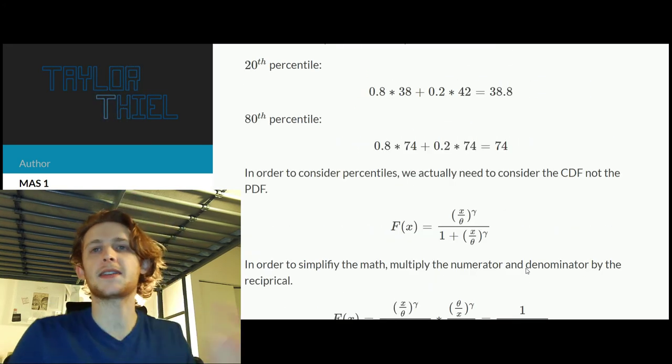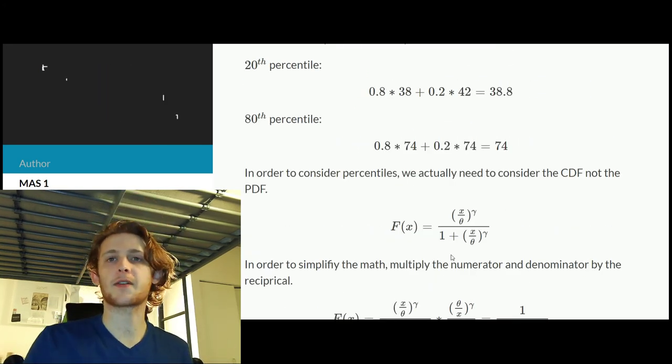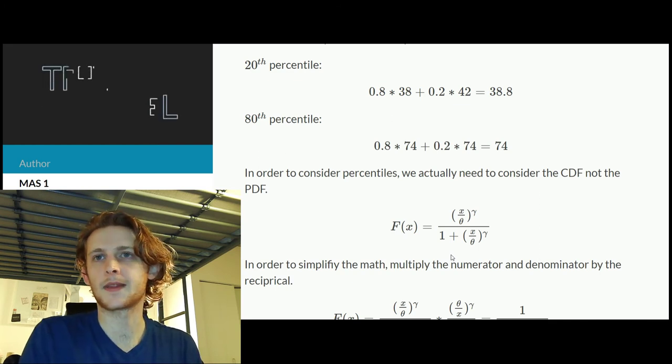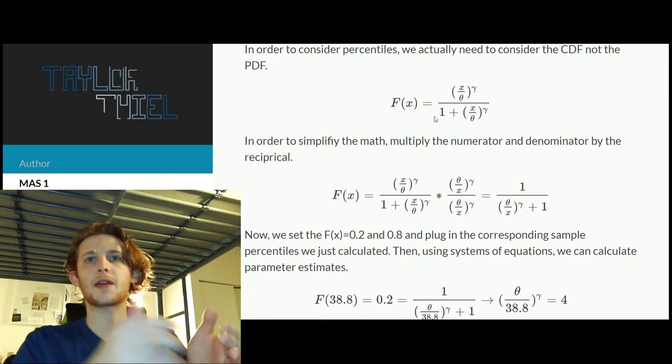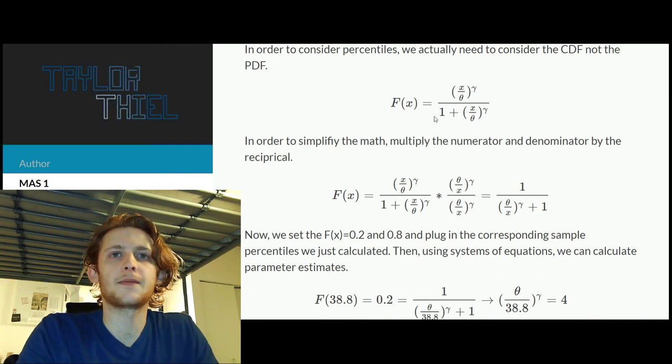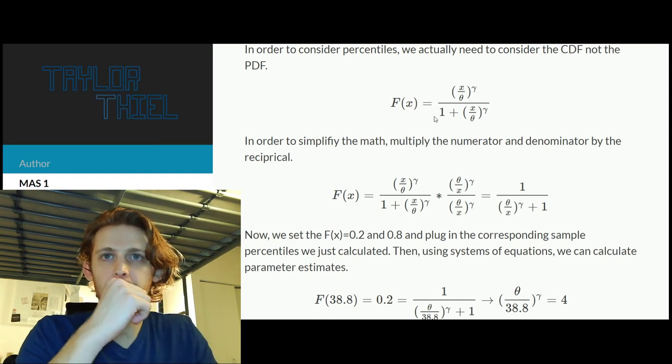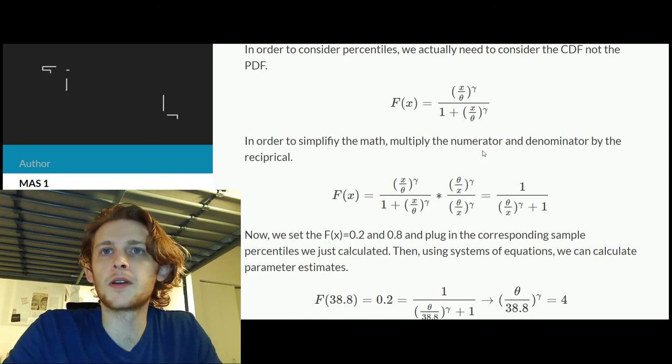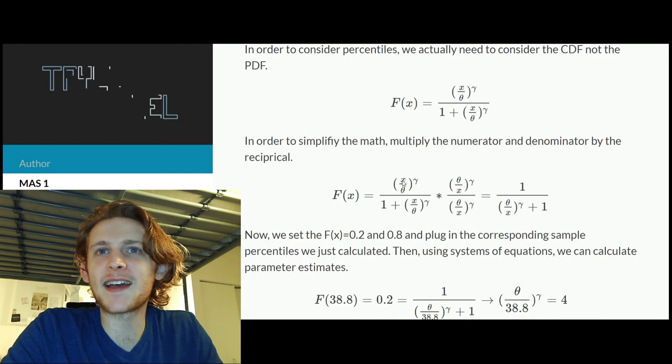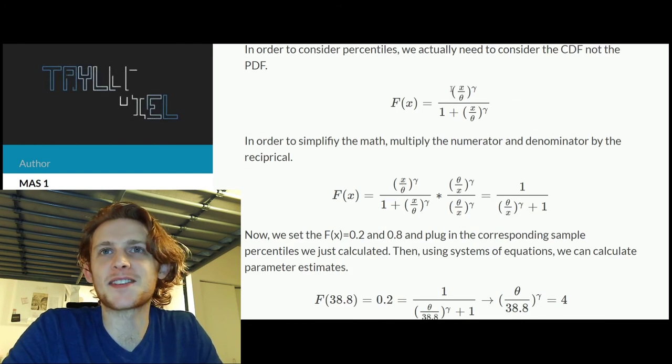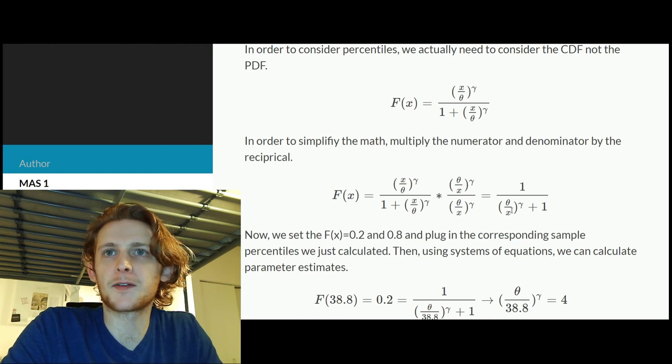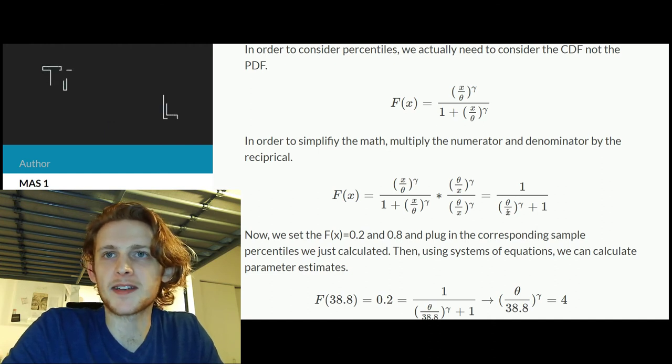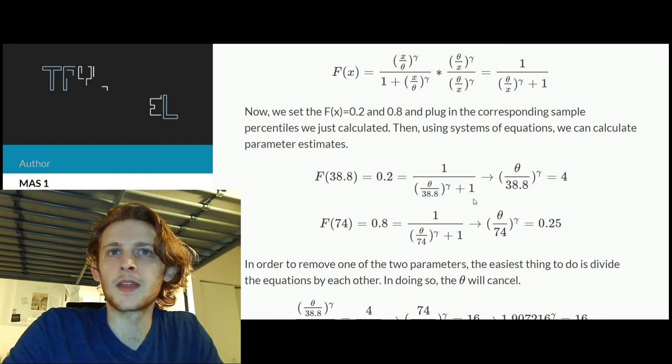So now that we have our two corresponding percentiles, we can go to the CDF. So again, this is you're going to pull this from the tables of the distributions that's provided for MAS1. So we have the CDF, and then we know that the CDF when it equals 0.2, that's the 20th percentile.